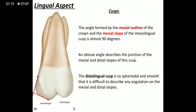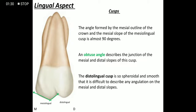The mesial outline of the crown and the mesial slope of the mesolingual cusp form almost a 90-degree angle. The mesial slope and the distal slope of the mesolingual cusp form an obtuse angle. The angulation of the tip of the distolingual cusp cannot be precisely described, as it is very smooth and spheroidal in shape.